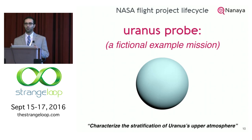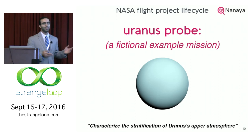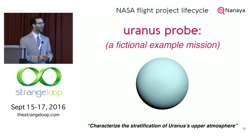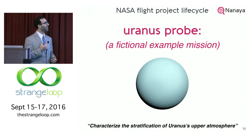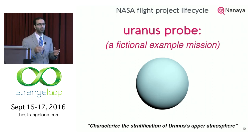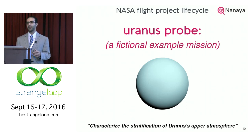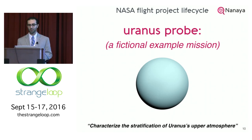To explain how NASA goes through these different phases, I'll use the example of a Uranus probe. This is a fictional example, but I have worked on two different concepts of this mission. The general idea is you send a spacecraft out there that deploys a probe. The probe enters Uranus and tries to take measurements of the upper atmosphere to understand how it is composed — the structure, temperature, density, and composition of clouds.